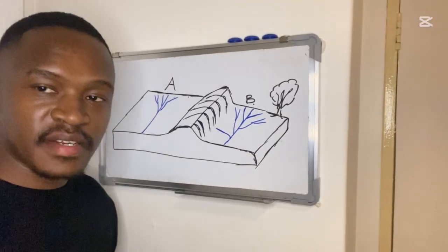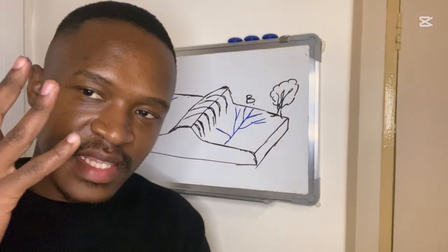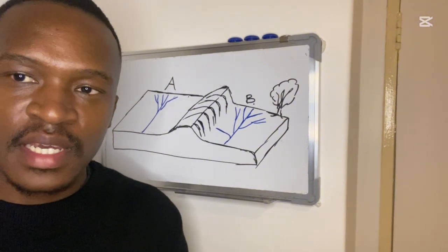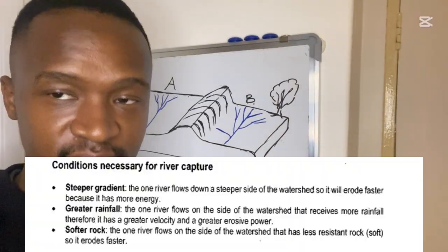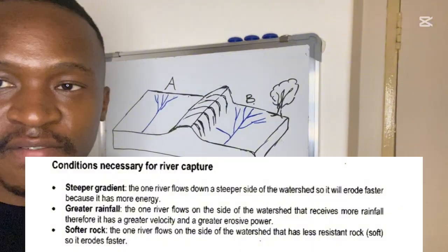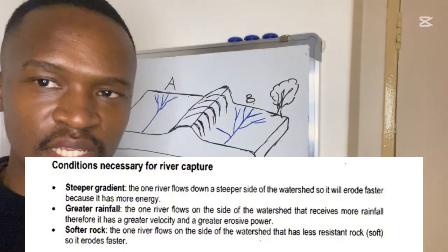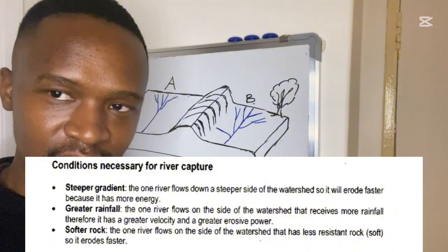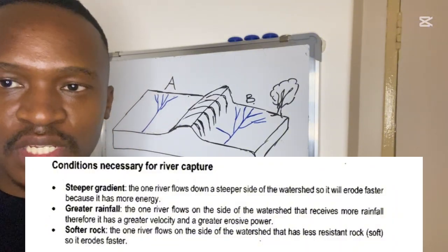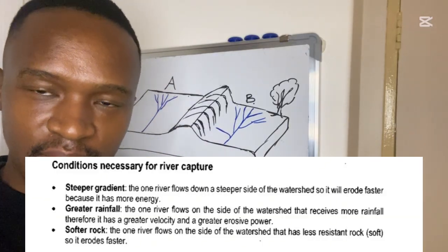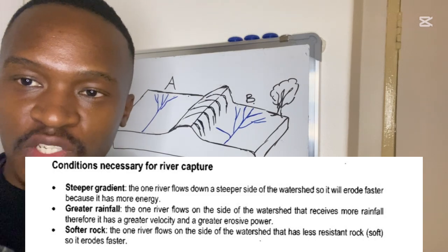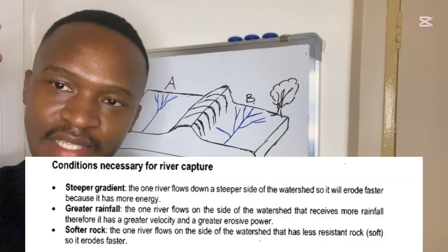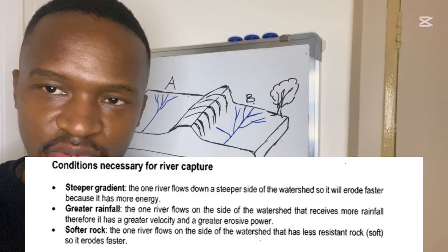There are three conditions necessary for stream piracy. Number one is a steep gradient, which allows the river to flow much faster, have higher velocity, and therefore greater erosive power. Number two, the river must flow over a soft or less resistant rock, which erodes faster, allowing the river to erode into another river's headwaters.